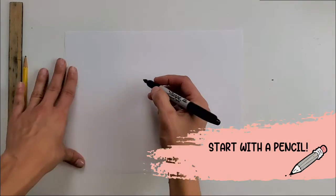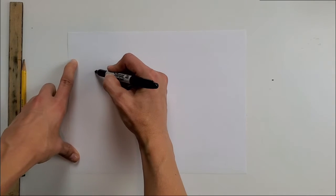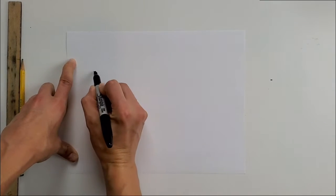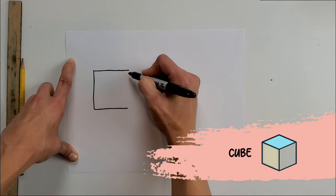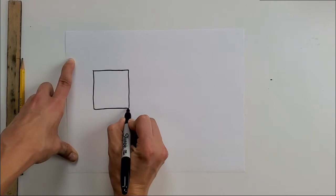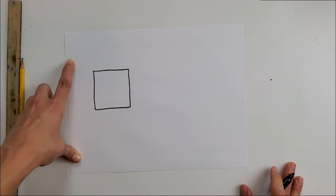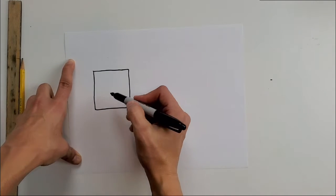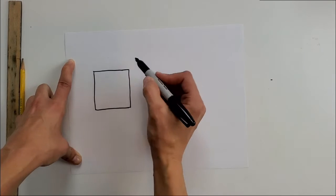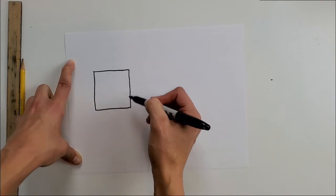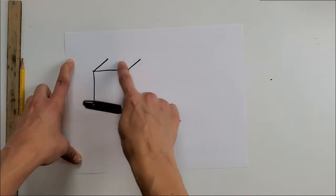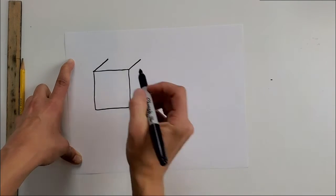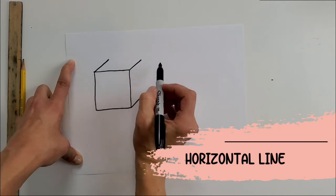So a cube would be a square to start. Again, squares are two-dimensional - they have height and width. If I want to turn this square into a cube, I'm going to create some diagonal lines from each of the corners, and then I'm going to connect those lines with a vertical line and a horizontal line.